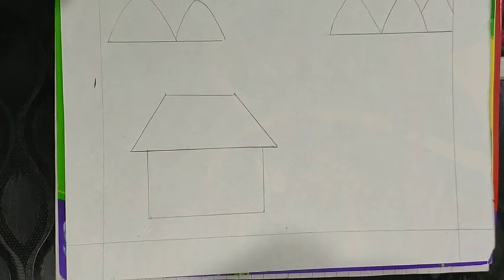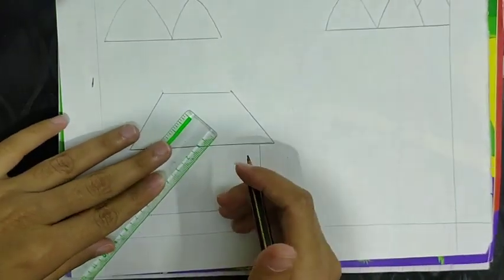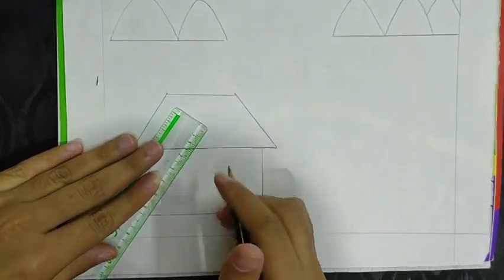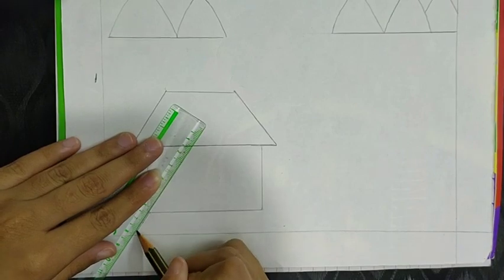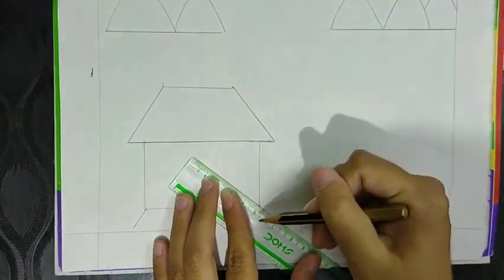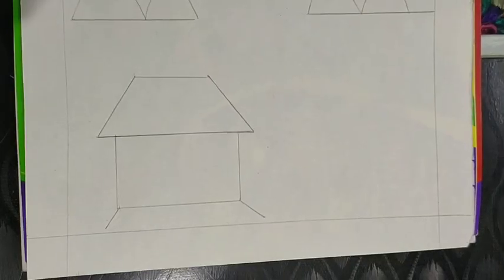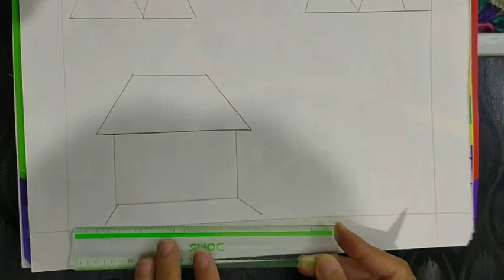Now again, we will make two slanting lines. Now draw a sleeping line.